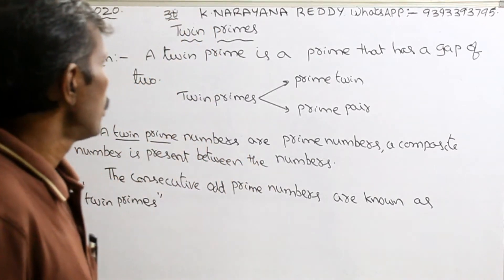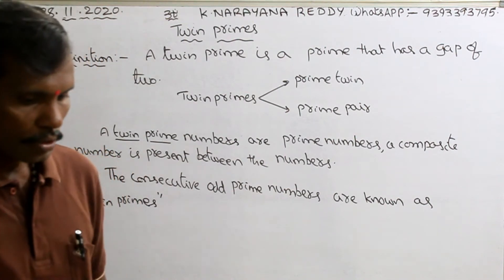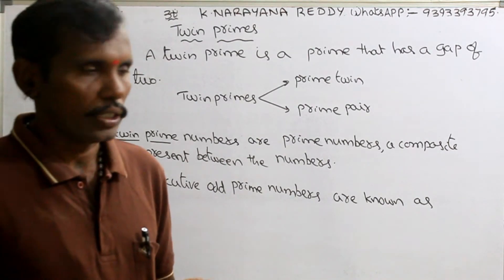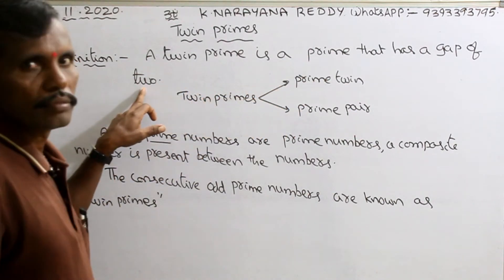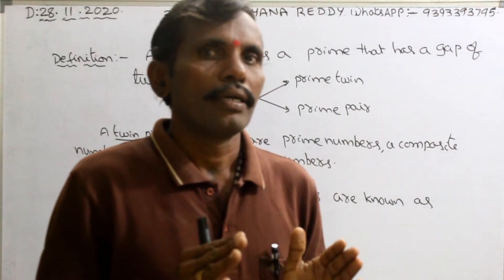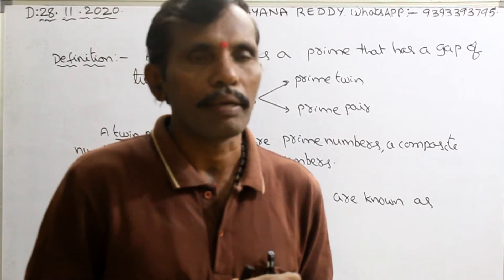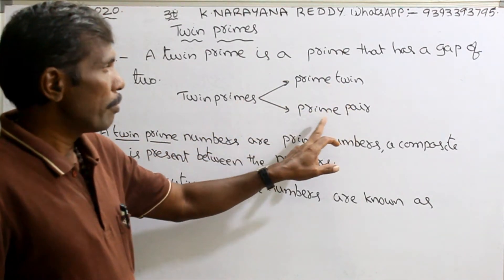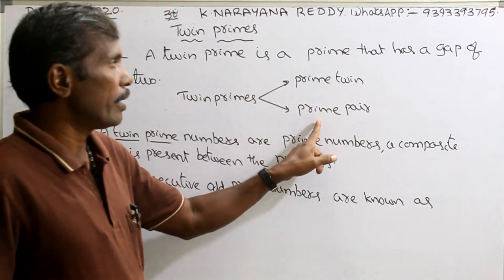Welcome to the channel. What are twin primes? How to define twin primes? A twin prime is a prime that has a gap of two. Whenever there is a gap of two between two prime numbers, that is called twin primes. Twin primes are also called prime twin or prime pair.